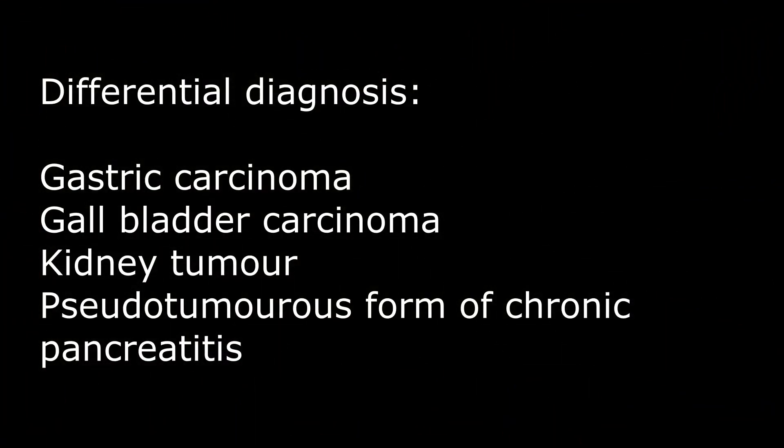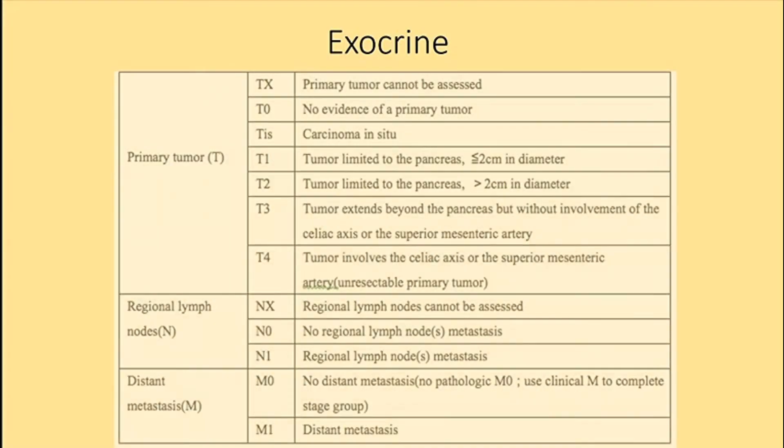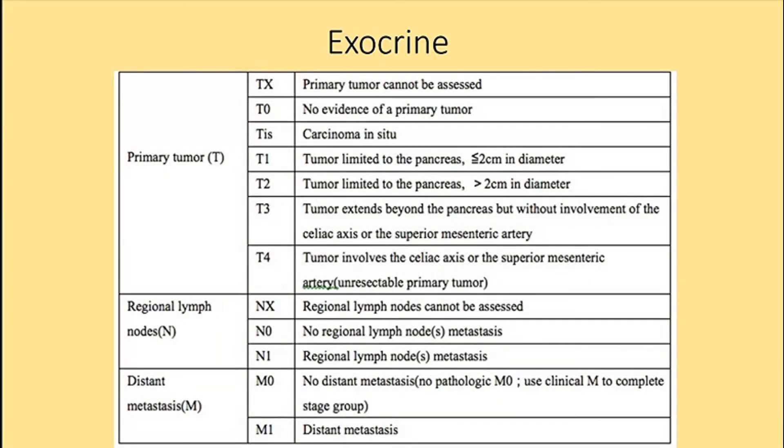For differential diagnosis, consider gastric cancer, gallbladder cancer, and cancers in that vicinity such as extrahepatic bile duct cancers or left kidney tumors. You can also consider the pseudotumorous form of chronic pancreatitis.